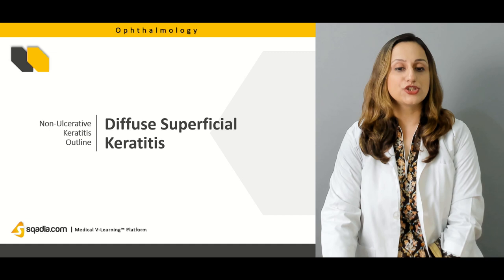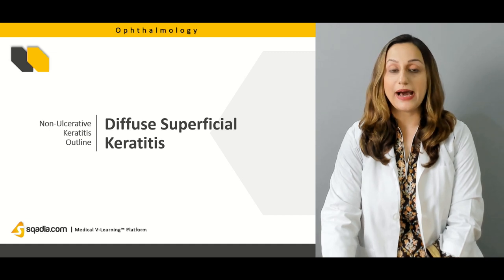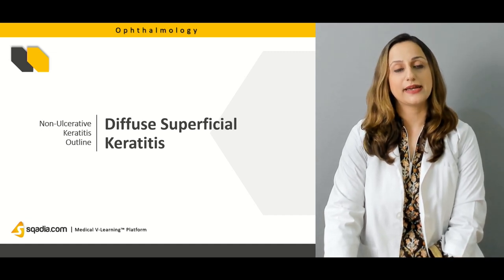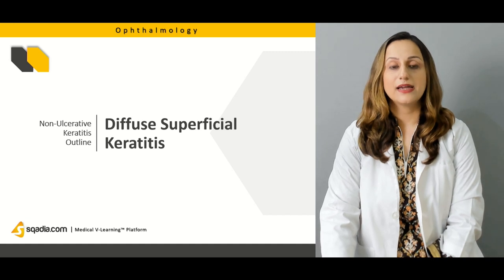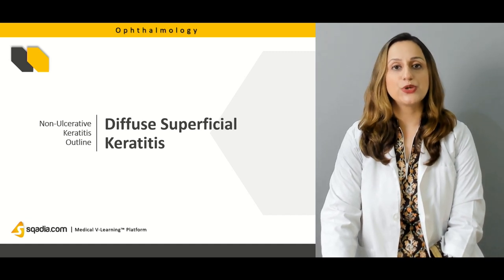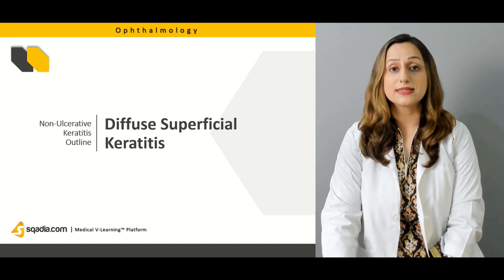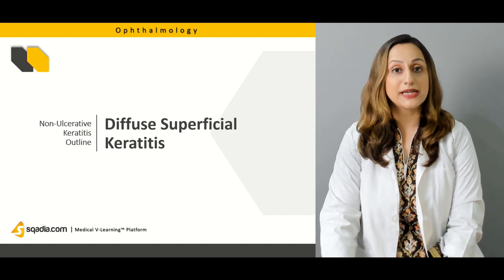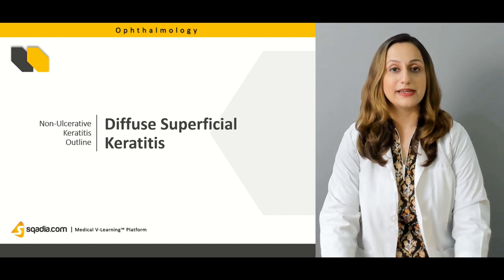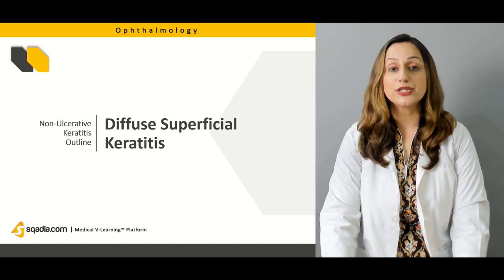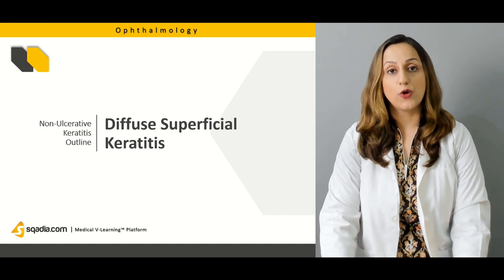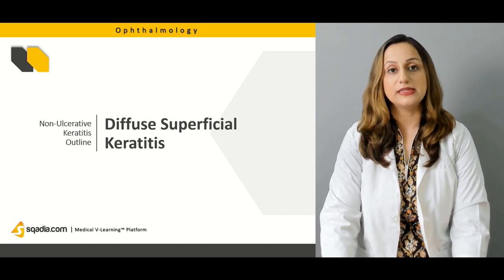First, we will be discussing the condition known as diffuse superficial keratitis. As the name indicates, it's going to involve the superficial layers of the epithelium, and it can sometimes involve the Bowman's layer of the epithelium. It's not going to involve the stromal layer or even the Descemet's layer of the cornea.